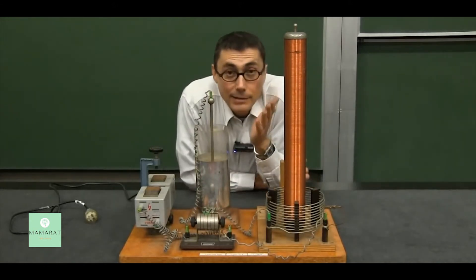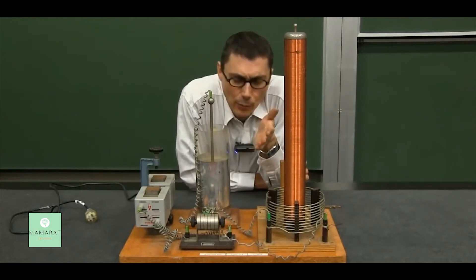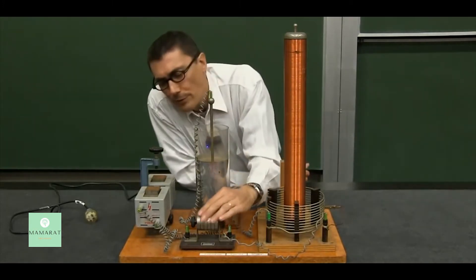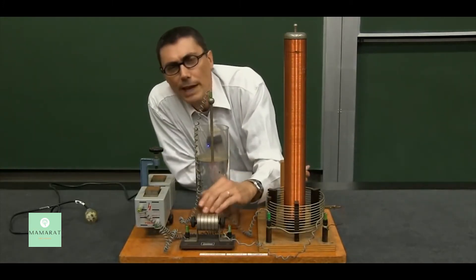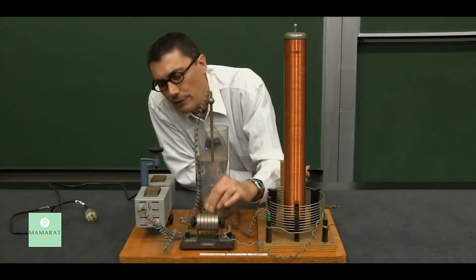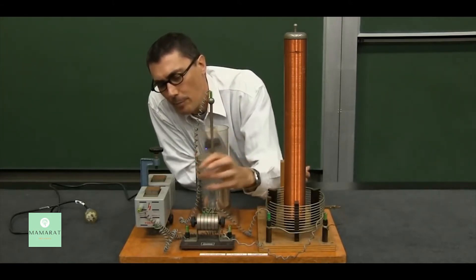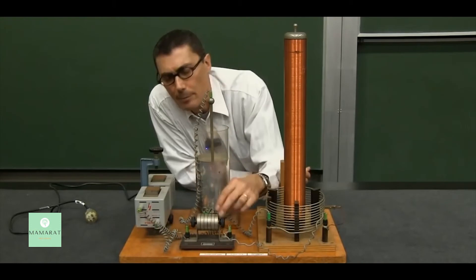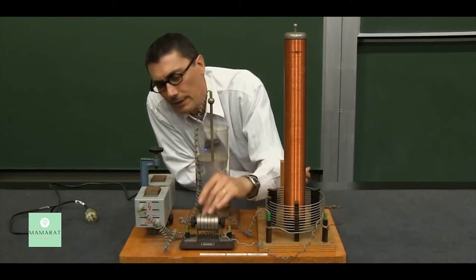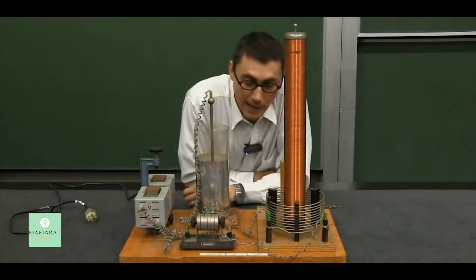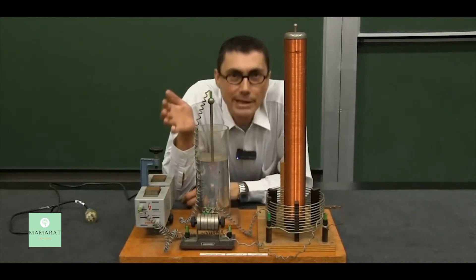On the bigger Tesla coils that you might see on the web, they have rotary spark gaps, and that way you keep rotating the electrodes so that you don't get the electrodes burning up. You spread the heat around so they last longer. All right, why do I want to make sparks?